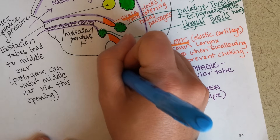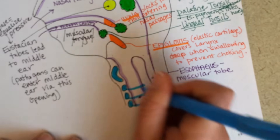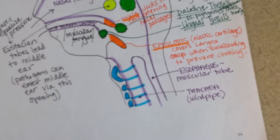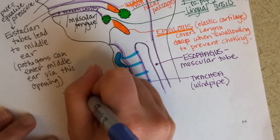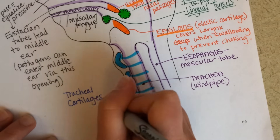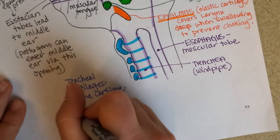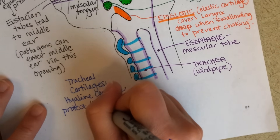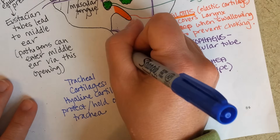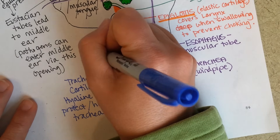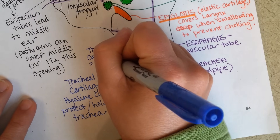The trachea is protected by hyaline cartilage. From the side view, the cartilages protect around the front — these are the tracheal cartilages, made of hyaline. They protect the trachea and hold it open. The special one that forms the Adam's apple is called the thyroid cartilage, because it's right near the thyroid gland.